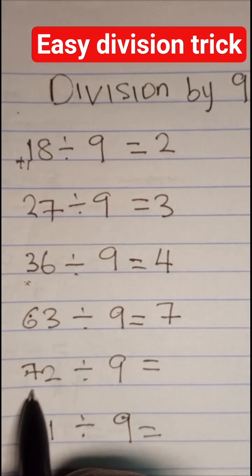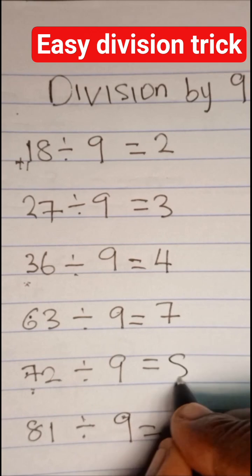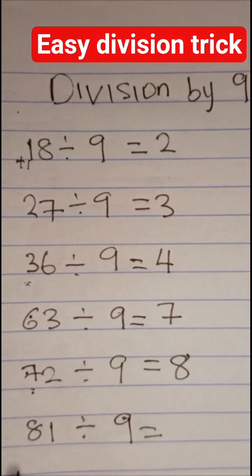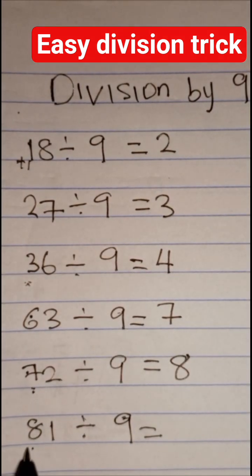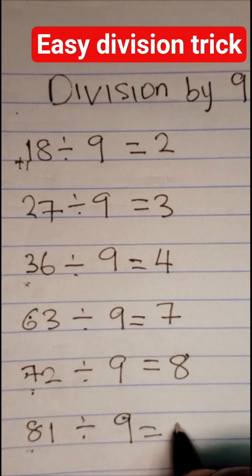Add one to the first digit number. One plus seven, that will give us eight. So add one to the first digit number. One plus eight, that will give us nine.